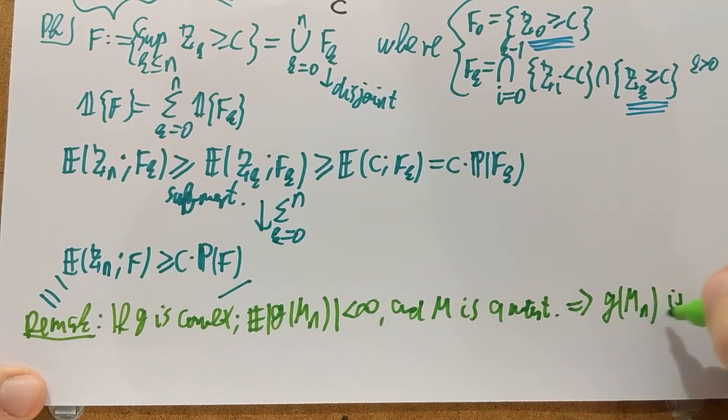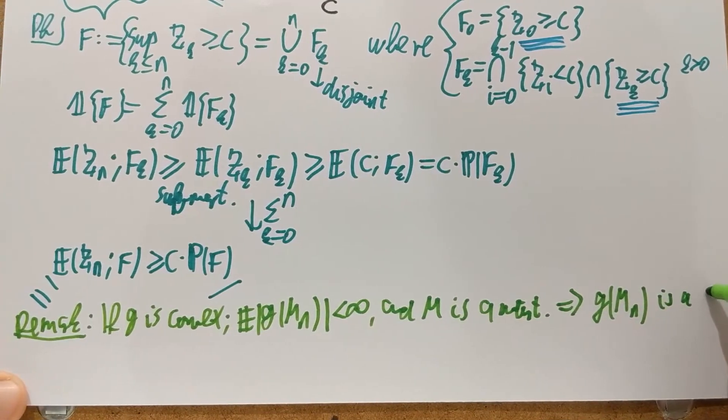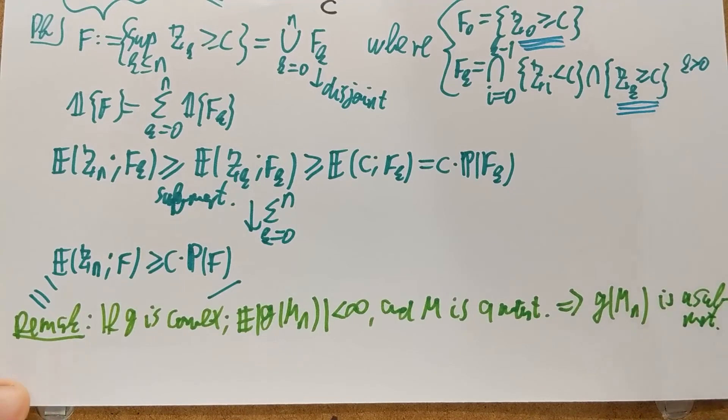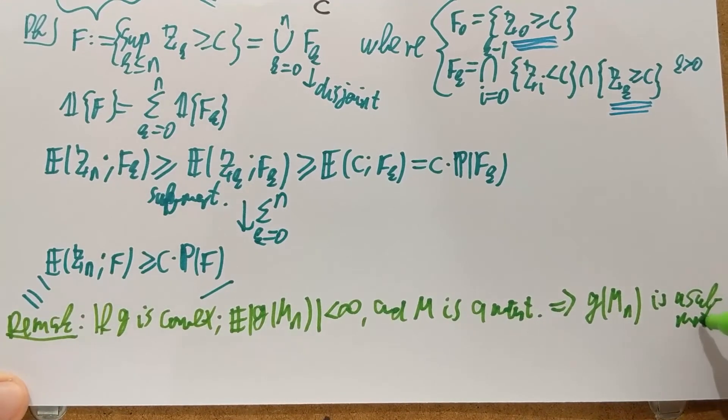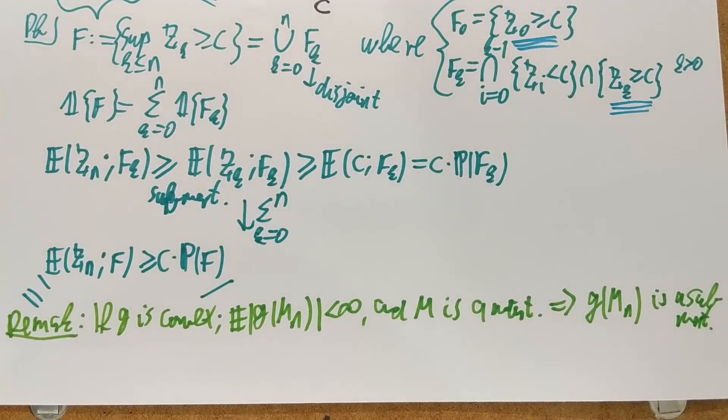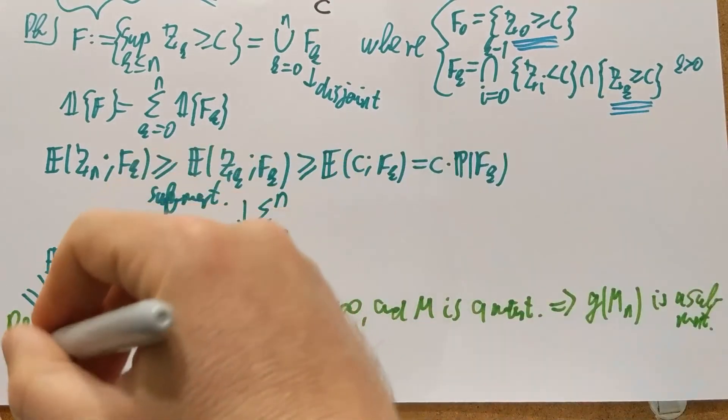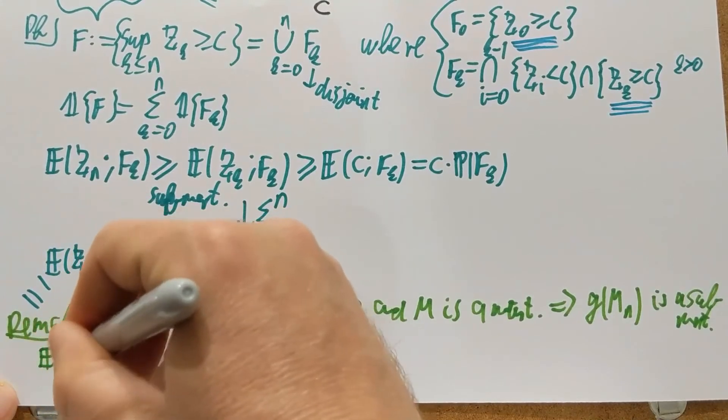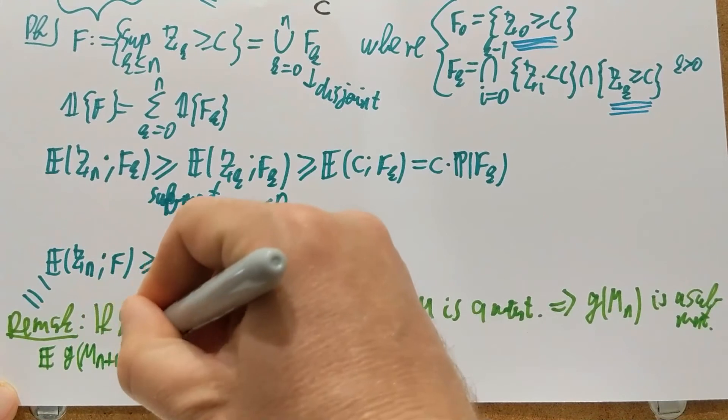So this is a submartingale. So if you have a martingale, you apply a convex function of it, which still has finite mean, then what you get is a submartingale. Why is that? Well, it's just Jensen's inequality.